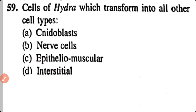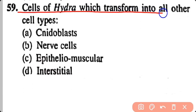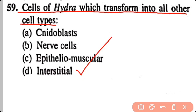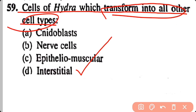Question number 59. The cells of Hydra which transform into all other cell types are: nematoblast, nerve cells, epithelomuscular cells, interstitial cells. Correct answer is option D. Interstitial cells are the totipotent cells, meaning they have the potential to transform into all other cell types.